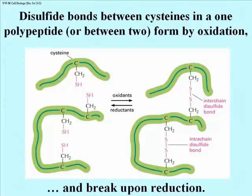One of the last things I want to talk about is disulfide bonds, which form between cysteines that happen to come close to one another in a polypeptide, or even between two polypeptides. As you can see from this illustration on the right side, you can have inter-chain disulfide bonds between two different polypeptides, or disulfide bonds — disulfide bridges, as we sometimes call them — can form between cysteines within the same polypeptide.